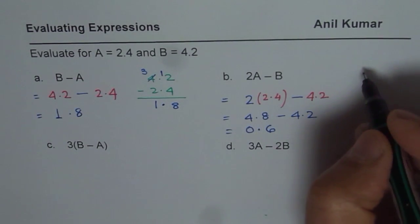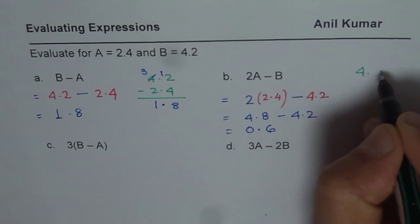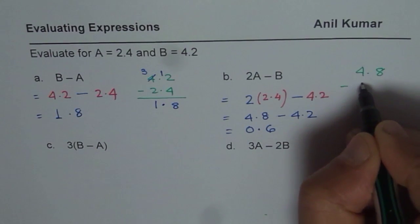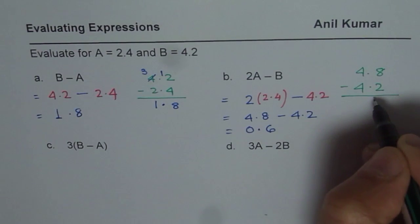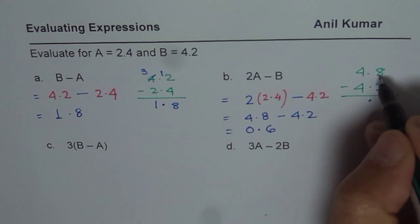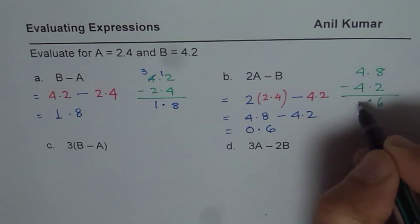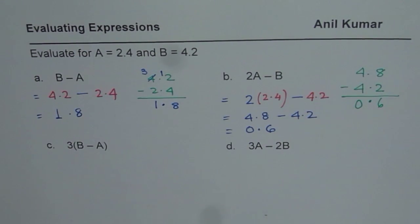You could do it on the side. You can say 4.8. There is no harm, so always ensure that you get the right answer. Align decimals. Once you align decimals, then it is kind of normal. Just place the decimals. 8 take away 2 is 6. 4 take away 4 is 0. So 0.6 is your right answer.